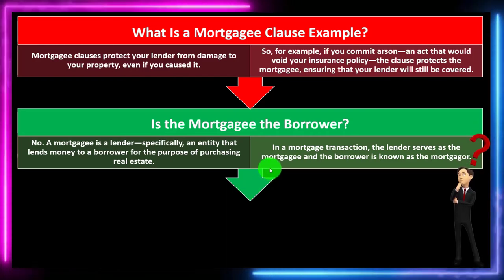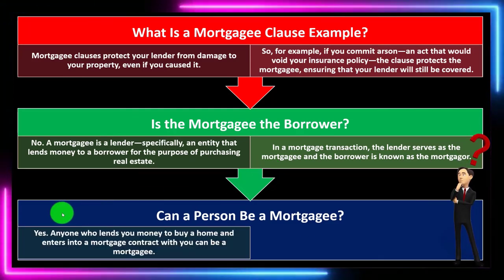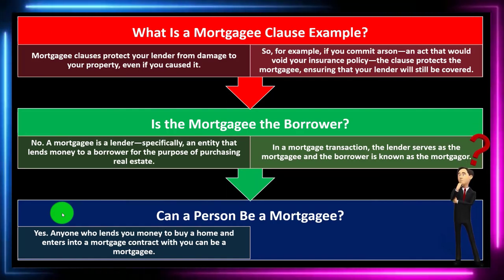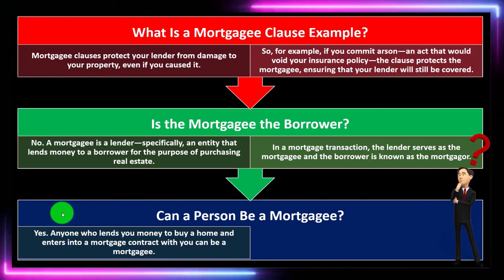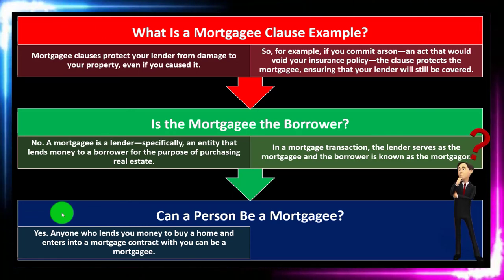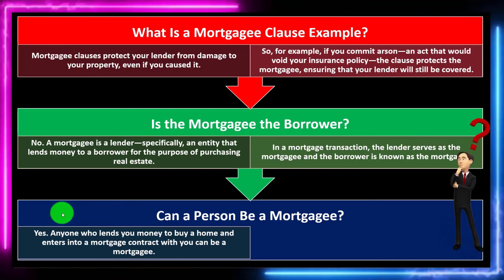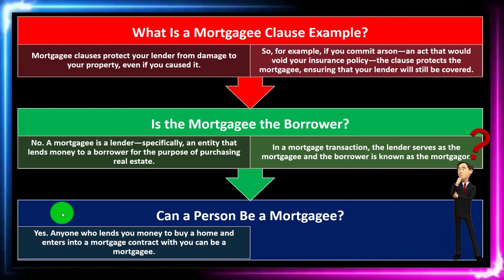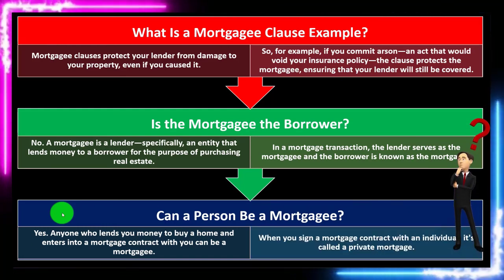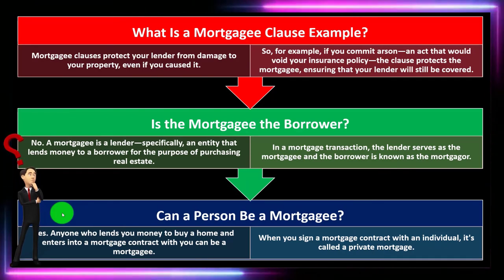Can a person be a mortgagee? Yes — anyone who lends you money to buy a home and enters into a mortgage contract with you can be a mortgagee. So while you're most likely thinking of a financial institution or bank, it's possible to get a loan from an individual. That person would want the same safeguards — the collateral and this kind of agreement to mitigate risk, just as a financial institution would. When you sign a mortgage contract with an individual, it's called a private mortgage.